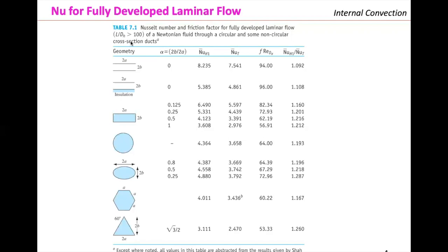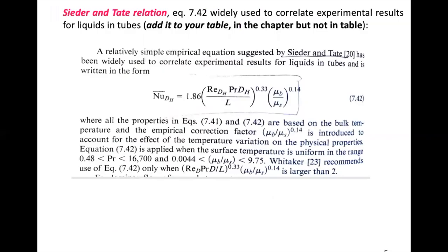Fully developed laminar flow is considered when the length divided by the hydraulic diameter is much greater than 100. From the table, you can read the Nusselt number — one column for isothermal surface (uniform wall temperature) and one for constant heat flux surface — which is why the table has two Nusselt columns.